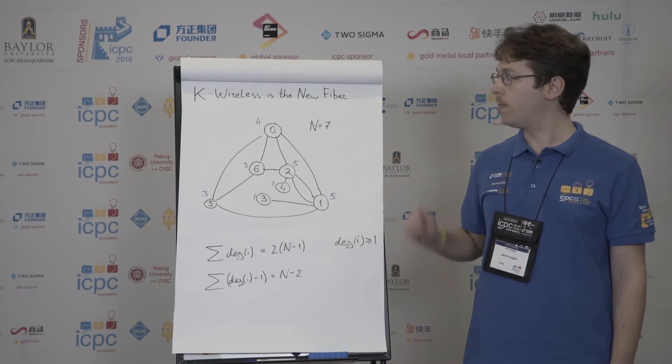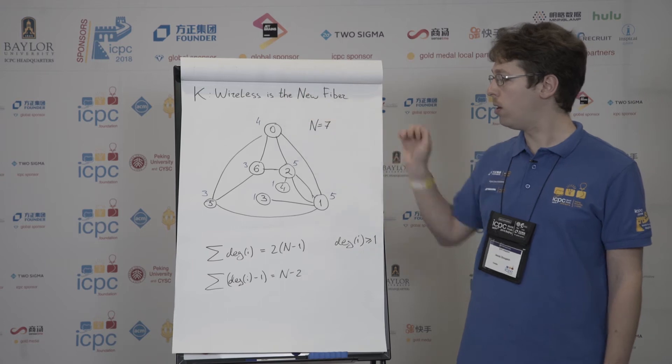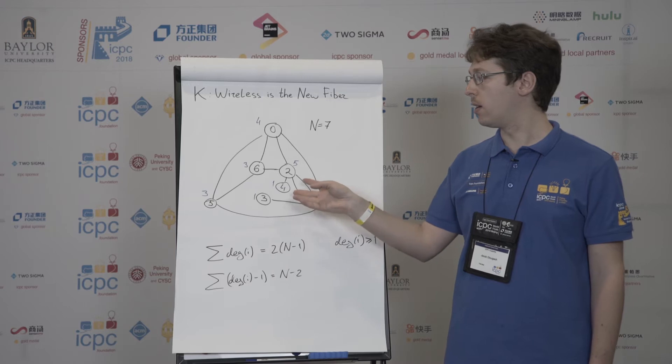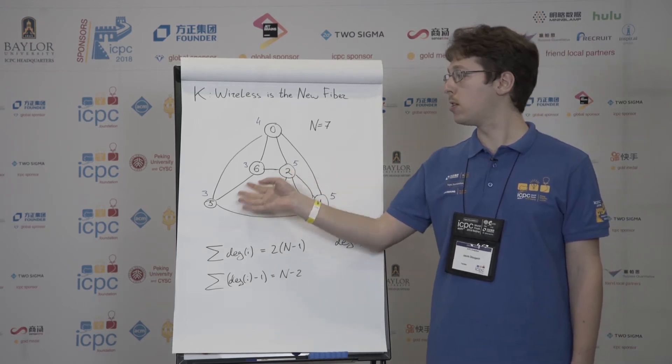For example, in this case, we have one vertex of degree 4, one vertex of degree 5, another of degree 5, and then a couple of vertices with degree 1, and a couple of vertices with degree 3.